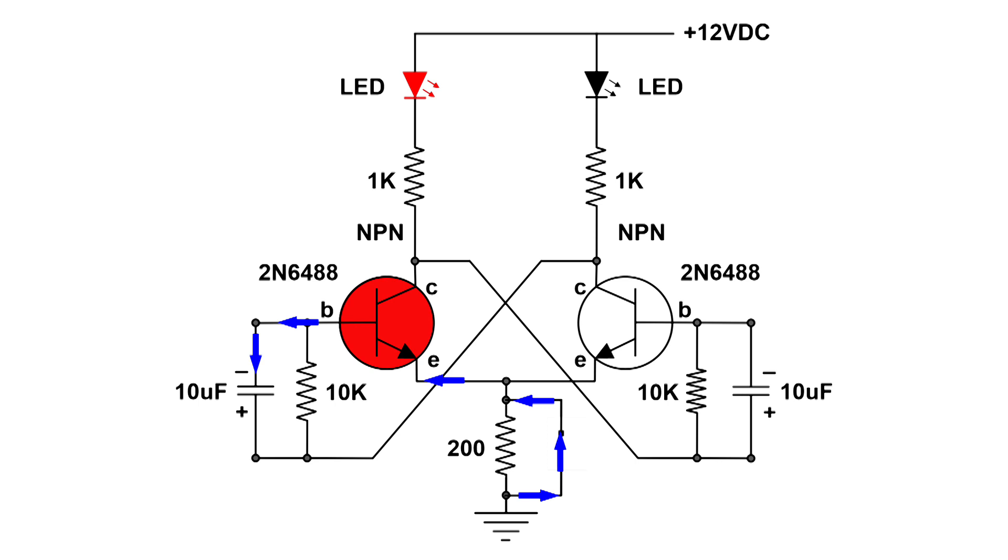When I open up that switch, we get a negative pulse coming from that 10 microfarad capacitor, and it's enough of a negative pulse that it turns off that NPN transistor. Now at the collector of that transistor, we've got positive voltage that goes over and up the 10k resistor on the right side, turning on the other transistor.